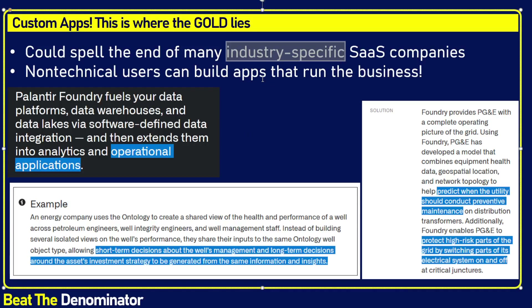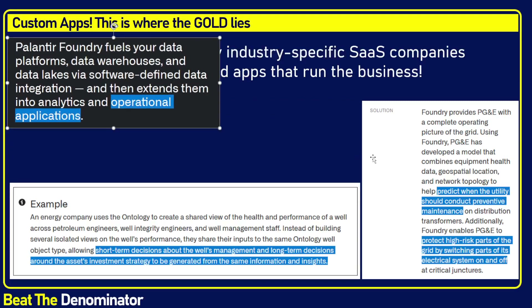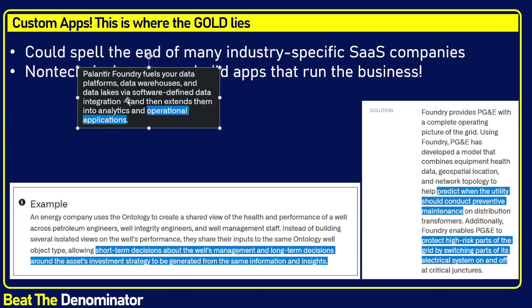Since this company deals with providing competitive advantage and best strategy for its customers, it's tough to know exactly what they do. But if you dig deeper on the website and see some of the use cases, you get a pretty good picture. Their customers obviously don't want to advertise too much. From their website: Palantir Foundry fuels your data platforms, data warehouses, software-defined data integration, and then extends them into analytics and operational applications. The applications are key here. The data informs the software, which runs the firm.